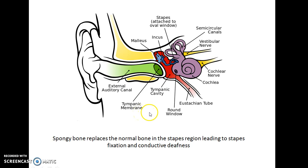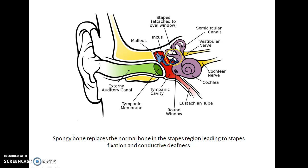This is a picture of a normal ear. In Otosclerosis, the spongy bone replaces the normal bone in the stapes region, leading to stapes fixation and conductive deafness. That is, in this region the spongy bone replaces the normal bone. Not necessarily, but more often than not, this region is involved.